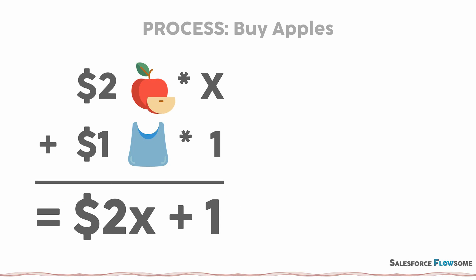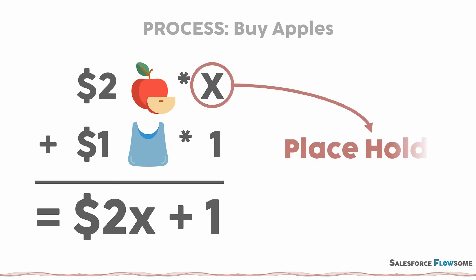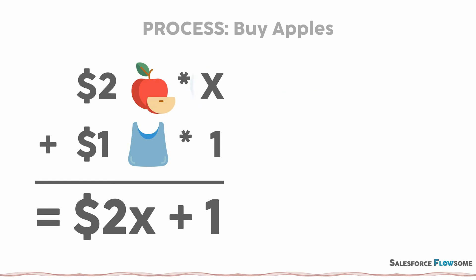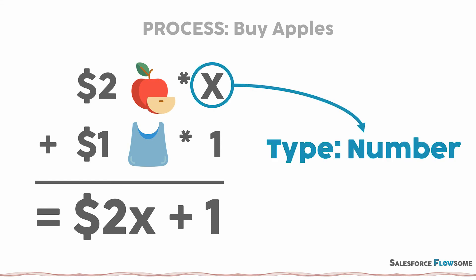For example, if I want to buy several apples that will cost $2 each and a $1 bag, I don't know how many apples to buy yet, so I use x as a placeholder. Then no matter how many I buy, I know I will pay 2x plus $1 at the end. Then depending on the scenarios, you will have different types of variables too. The x here is the number type variable.